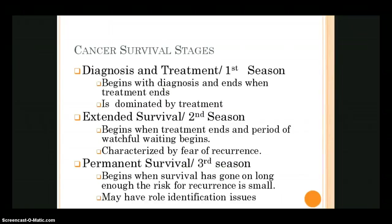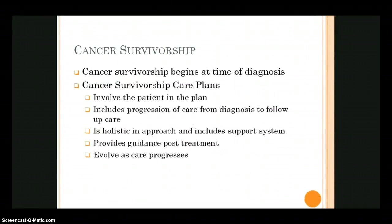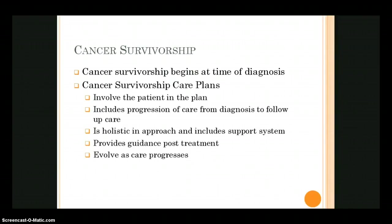Survivorship has been a really big emphasis. Starting back in 2006, the Institutes of Medicine issued a report recommending that every person diagnosed with cancer should have an individualized survivorship care plan. On this slide I've outlined what a survivorship care plan is. Also on Blackboard there's a link to the American Cancer Society that gives an example of a booklet — a roadmap to help a person record where they've been and provide information to help plan their cancer journey.